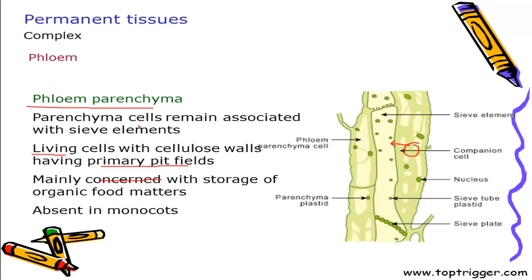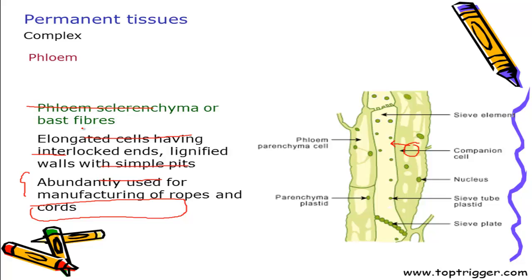Phloem parenchyma remains closely associated with sieve elements and is mainly concerned with storage of organic foods. Interestingly, phloem parenchyma is absent in monocots — it is present only in dicots. Finally, phloem sclerenchyma or bast fiber: whatever fibers of commerce we see are primarily made up of bast fiber, so the manufacturing of ropes and cords is done by bast fiber only. This is all about the complex conducting tissue present in plants. Thank you.